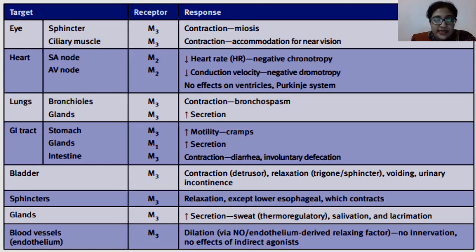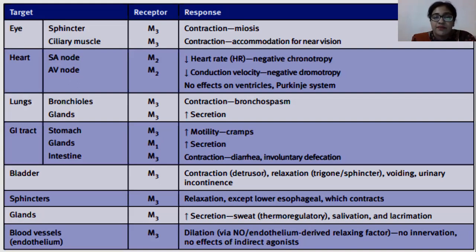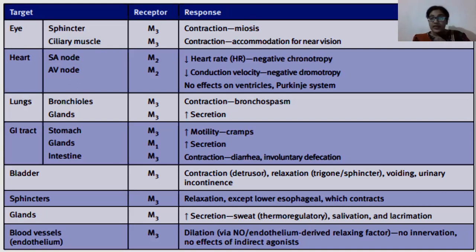For the bladder: with muscarinic activity, the bladder muscle contracts and the trigone sphincter relaxes, leading to urinary incontinence. With anti-muscarinic drugs, urination becomes controlled rather than uncontrolled. Regarding sphincters, muscarinic causes relaxation except the lower esophageal sphincter, which contracts. In anti-muscarinic drugs, the opposite occurs — sphincters contract except the lower esophageal, which relaxes, potentially causing acid reflux.